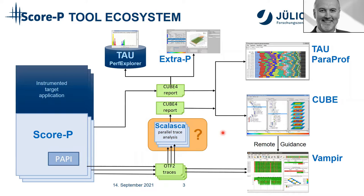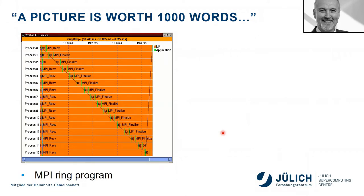Today I want to focus on parallel trace analysis in ScaLasKa — this is something specific. This project was born over 20 years ago when we realized that looking at trace pictures, they are often intuitive, but at some point you run into problems. Here's an example from an MPI class where people were told to write a little MPI program that sends a message around in a ring: process zero sends to one, which sends to two, and so on until the last process sends back to zero.